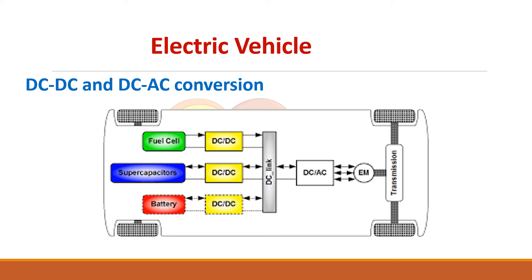If a supercapacitor has 24 volts and you want 48 volts on the DC link, you use another step-up converter. If a fuel cell has 72 volts and you want only 48 volts, you use a step-down converter. All voltage sources are brought to the same 48-volt bus level through their respective DC-DC converters. This DC bus then supplies the motor through an inverter, converting DC to AC to drive the motor.